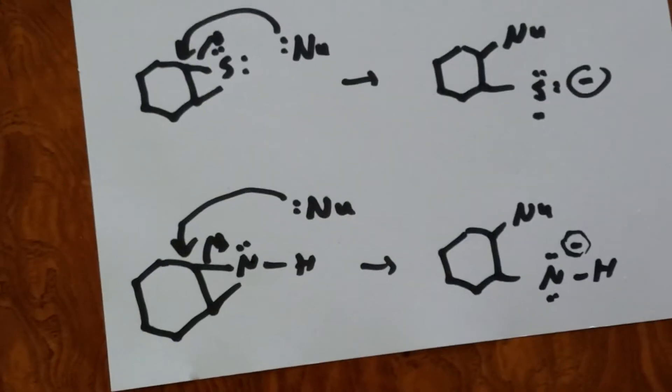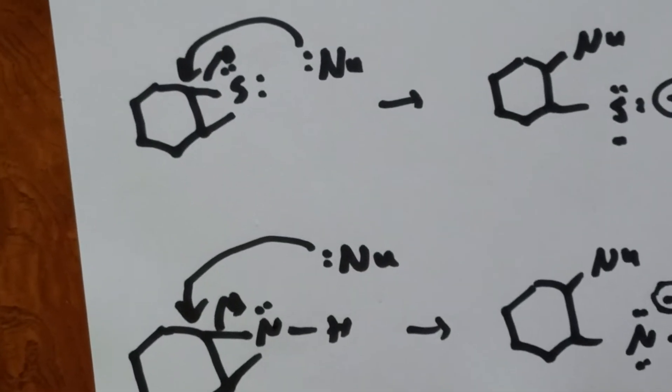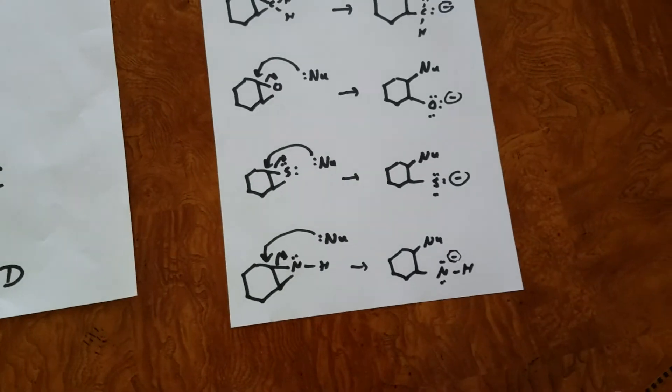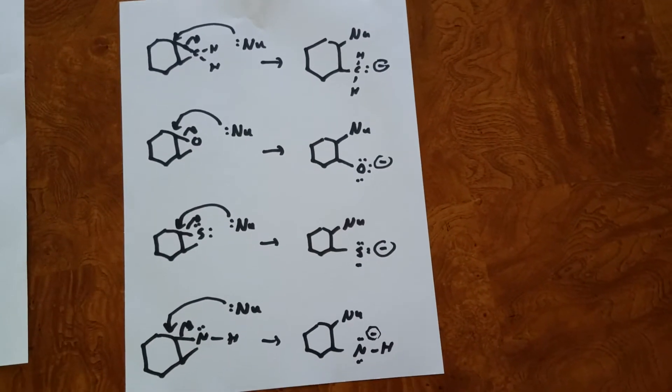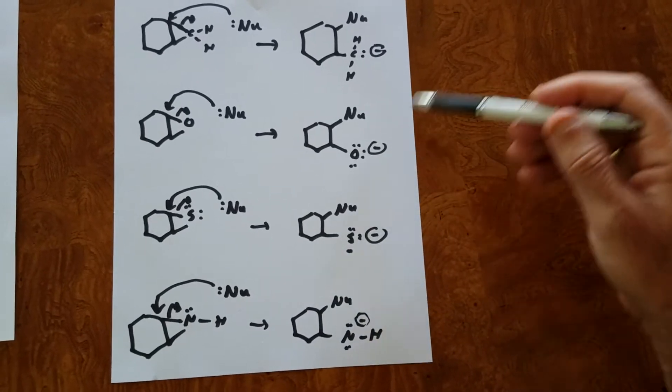So the question is, which one goes the fastest? The best leaving group is the one that's the most stable. And therefore, all we're going to do is look for which one of these is the most stable.